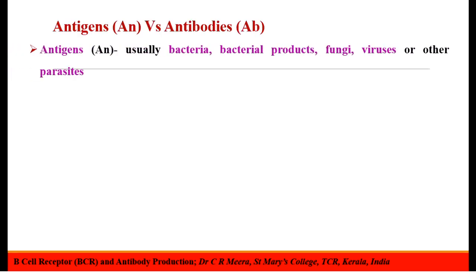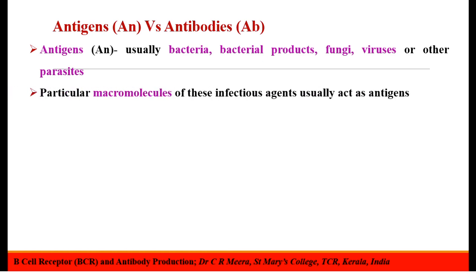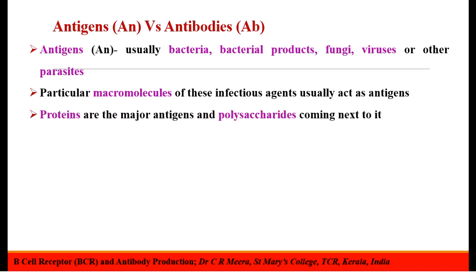Antigens are usually bacteria, bacterial products, fungi, viruses or other parasites. Usually, entire organisms do not function as the antigen. Particular macromolecules of these infectious agents usually act as antigens. Proteins are the major antigens and polysaccharides come next. Lipids and nucleic acids of these microorganisms are less antigenic and do not act as antigens unless they are coupled with proteins or polysaccharides.